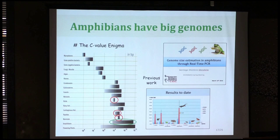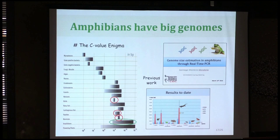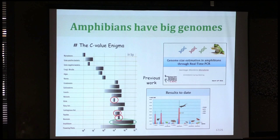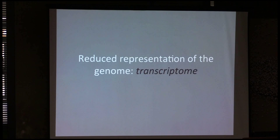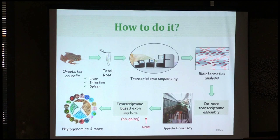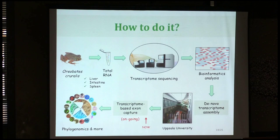What I want to show with this slide is that amphibians, shown in green, have very large variation in genome size compared to birds, reptiles, and mammals, which are also vertebrates. That's quite a problem. So we decided to use the transcriptome instead of the whole genome — the transcriptome is a reduced representation of the genome, and that's how we are conducting our studies.